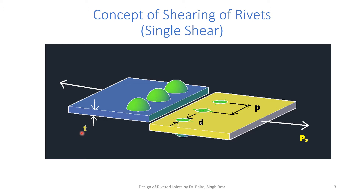For calculating the resistance offered to shearing, we are interested in knowing how many rivets got sheared per unit pitch. We observe that for this pitch, half of the rivet here and half of the rivet here got sheared. They got sheared at a single plane, so this is known as single shear. Half and half constitutes one rivet, so the number of rivets sheared per unit pitch is half plus half, equal to one.